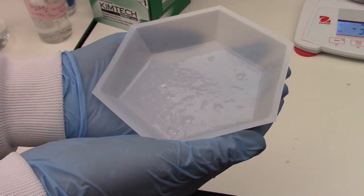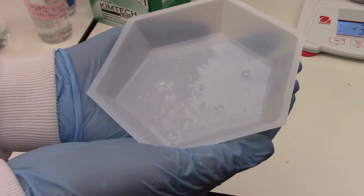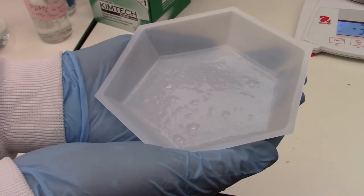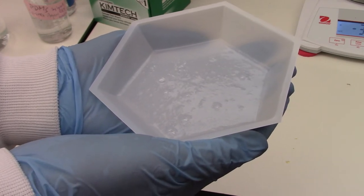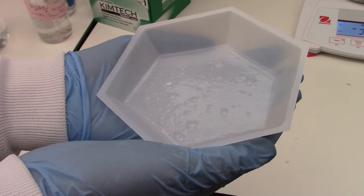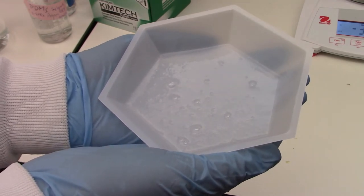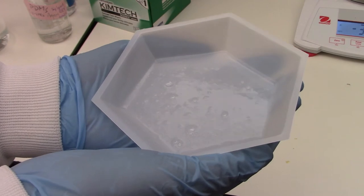Now that we've mixed these two components together, you can see there's a lot of bubbles that form during the mixing process. So what we're going to do next is put this into a vacuum chamber and use that suction to help pop and get rid of all these bubbles.